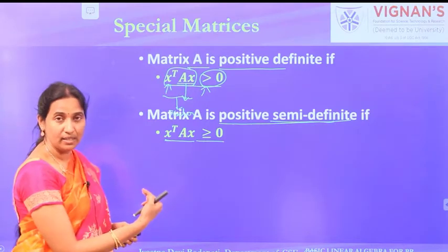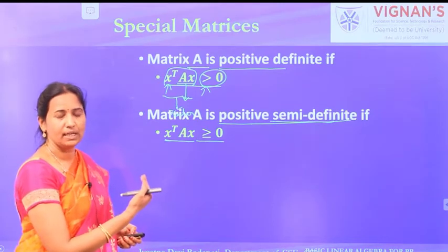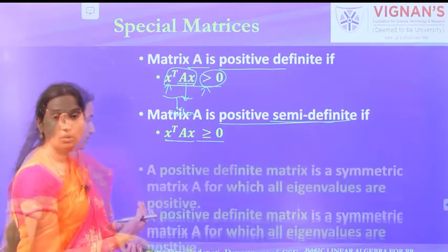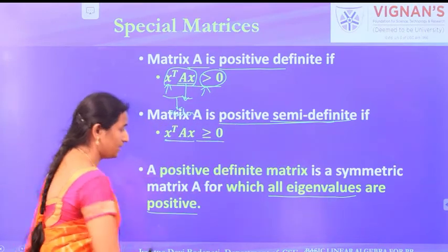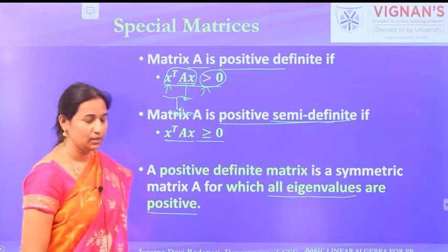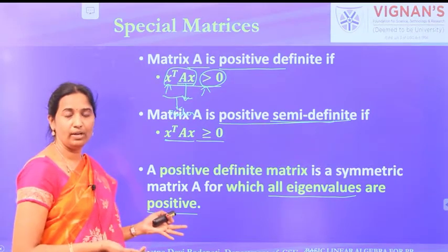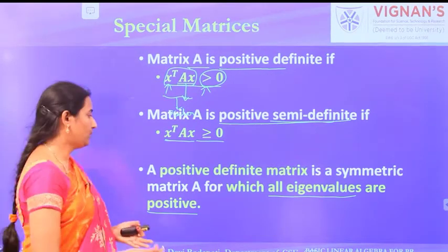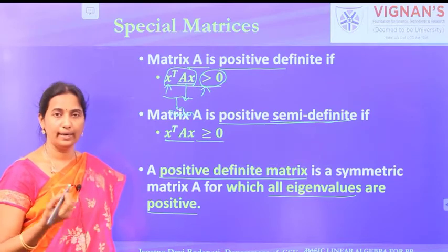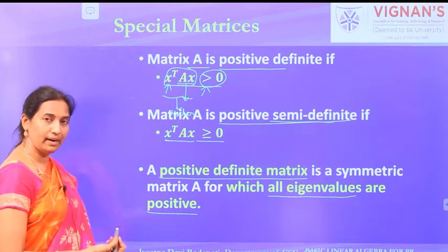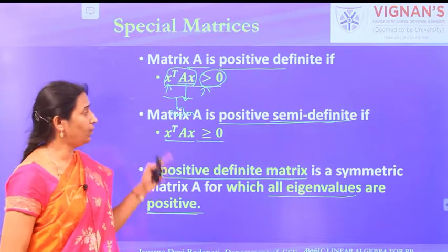These special matrices are important because of their eigenvector and eigenvalue properties. If you consider any positive definite matrix, then all eigenvalues are positive values. In contrast, for regular matrices, eigenvalues can be complex, positive, or negative. For a positive definite matrix, all eigenvalues λ₁ through λₙ are strictly positive.